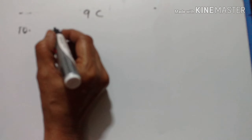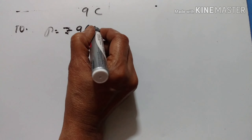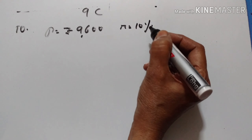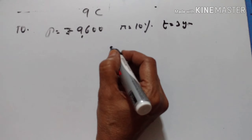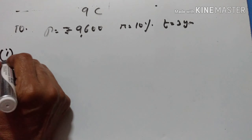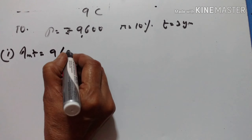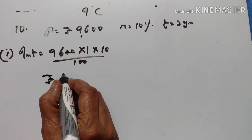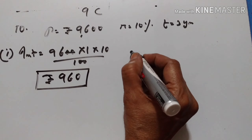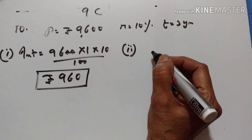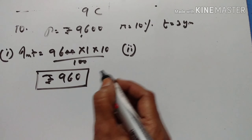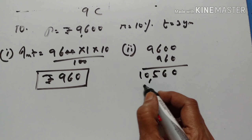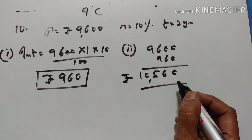10th problem. A man invests Rs. 9,600. P is equal to Rs. 9,600 at 10% per annum compound interest for 3 years. Calculate the interest for the first year. Interest for the first year is equal to P, T — 1 year — R upon 100. 96 into 10 is equal to Rs. 960. This is the interest for the first year. Amount at the end of the first year is equal to 9,600 plus 960 is Rs. 10,560.